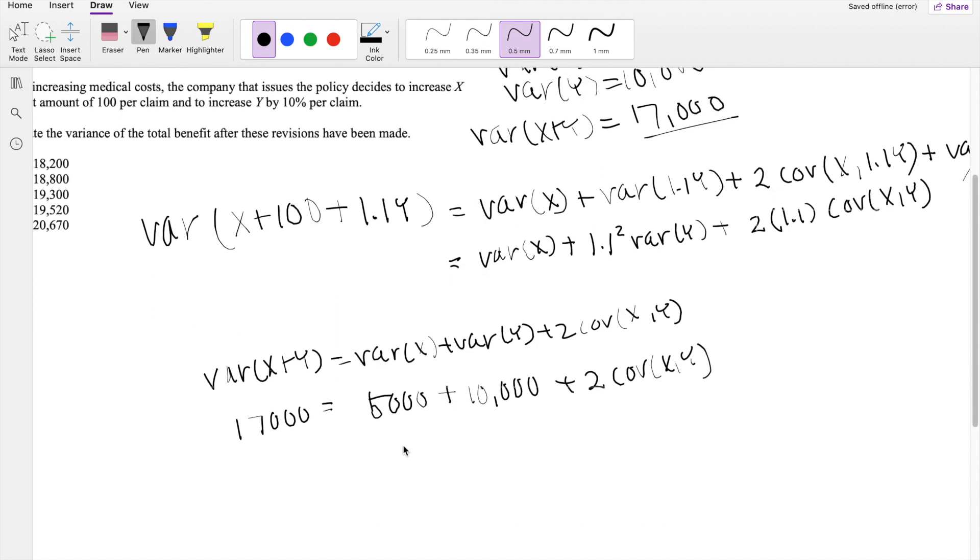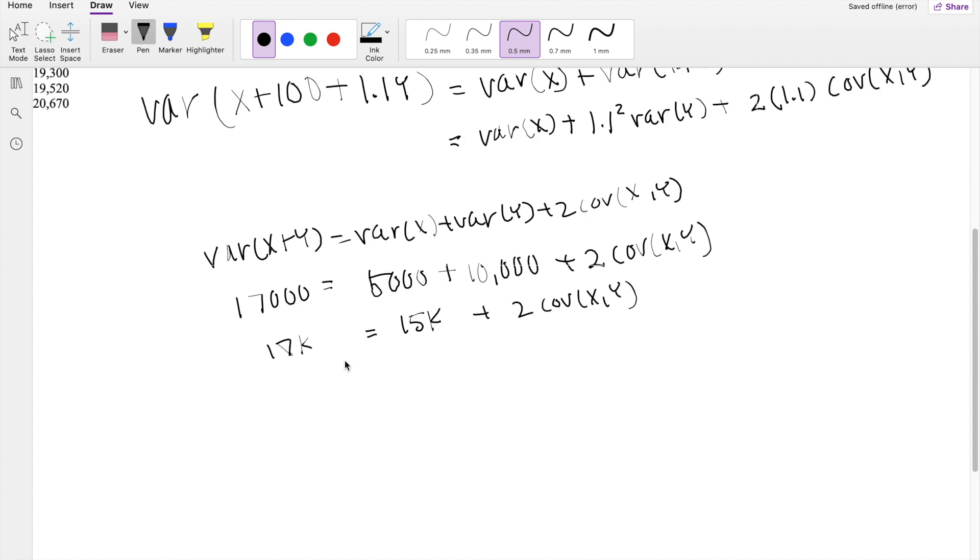So then this right here is going to be 15k is equal to 17k, right, plus 2 times the covariance. And I'm just writing k because my pen's dying, but anyways, so this is 2k is equal to 2 times covariance of x and y. So that means the covariance of x and y must be equal to 1,000.